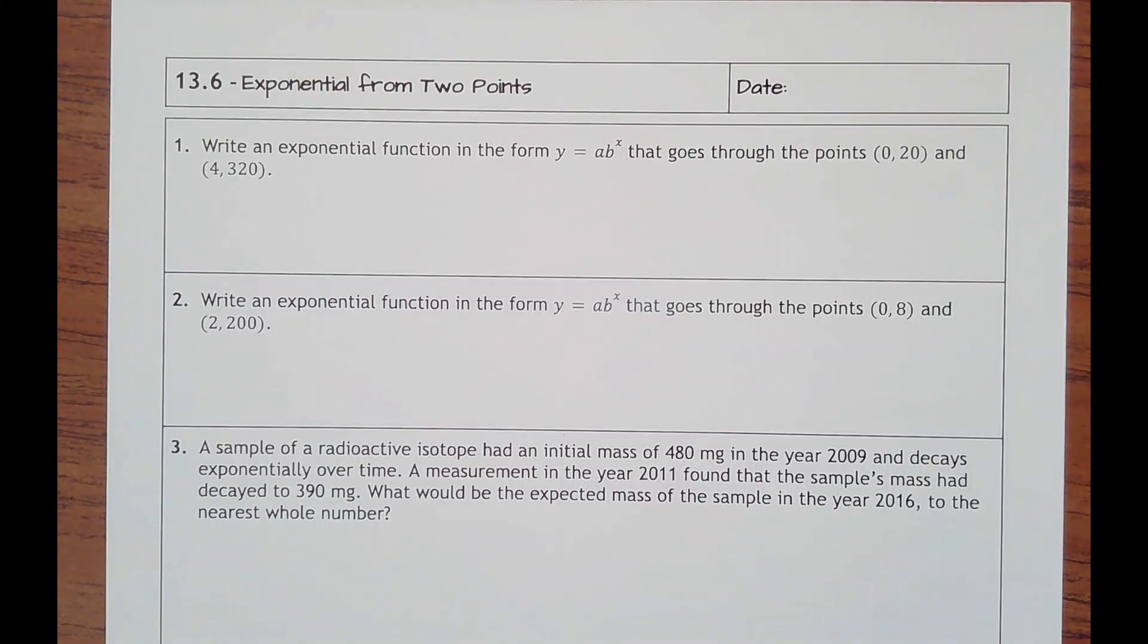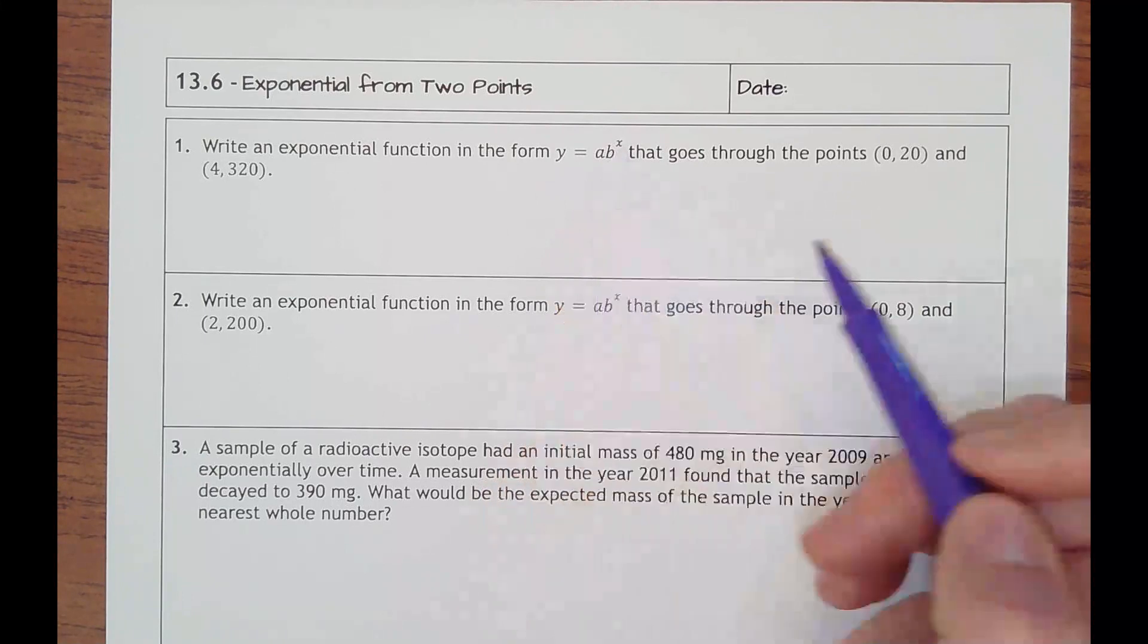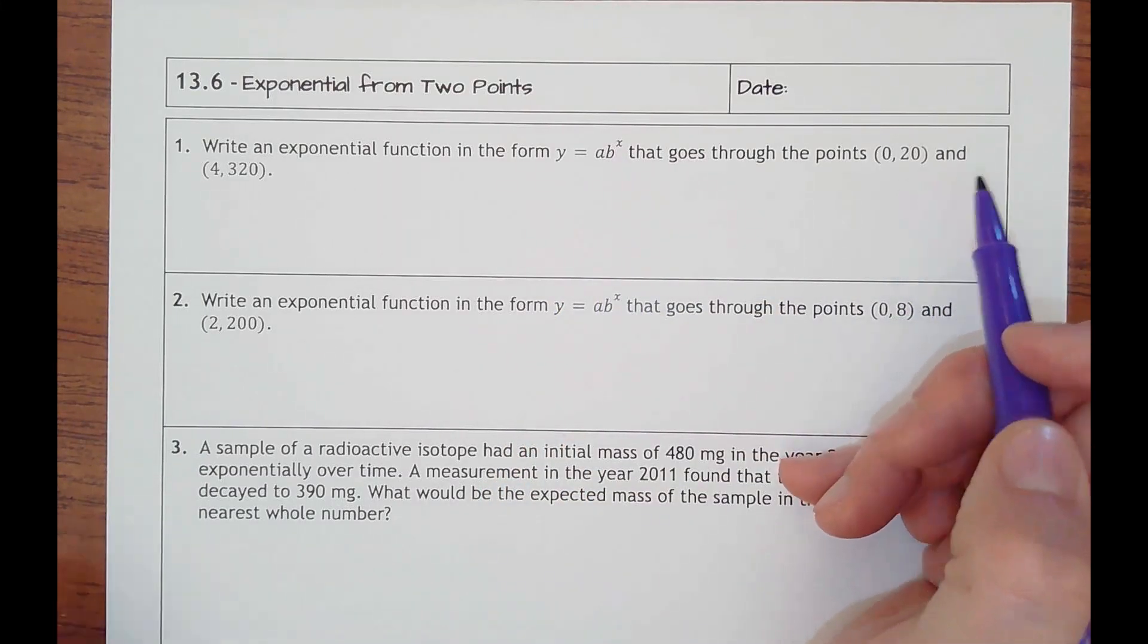Lesson 13.6 is exponential from two points. We're asked to write an exponential function. They give us the form here, y equals a times b to the x power that goes through the points (0, 20) and (4, 320).